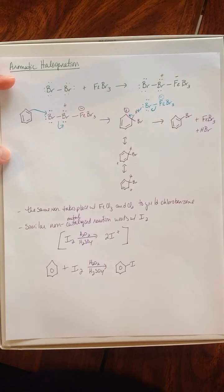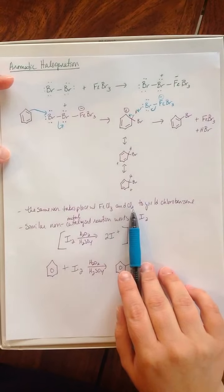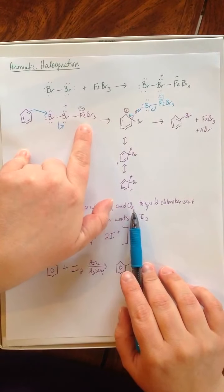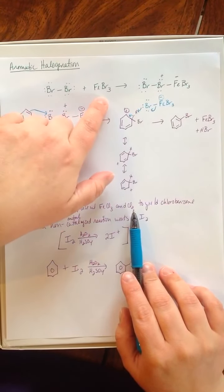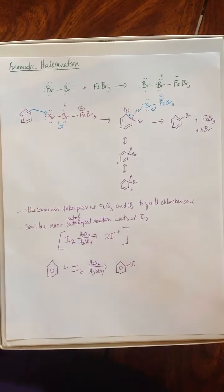If you wanted to do this and end up with a chlorobenzene instead, you would use FeCl3 and Cl2. Notice we do try to match that. So Br2 and FeBr3, because you could have some exchange rate that happens there.